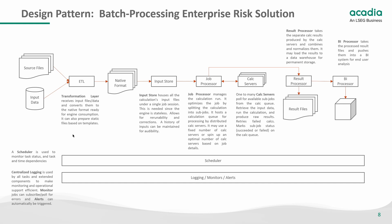Therefore we need a transformation layer coupled with a scheduler to receive input files and data, convert them to the native format ready for the engine's consumption, and manage dependencies to make sure all critical data is received before progressing. The result is a complete set of input data in the native format, housed in an input store containing all calculation input files under a single job session — for example, today's risk calculation. This is needed since the engine is stateless. An input store allows for re-runability, auditability, and facilitates a corrections process.